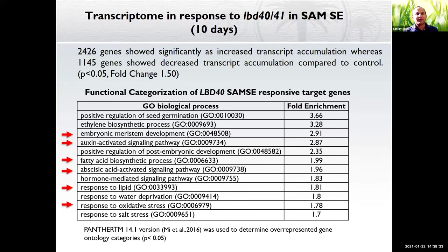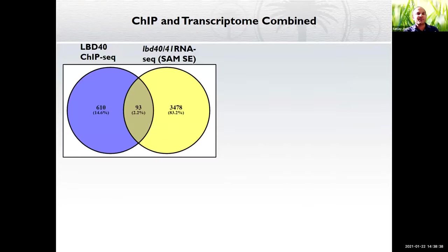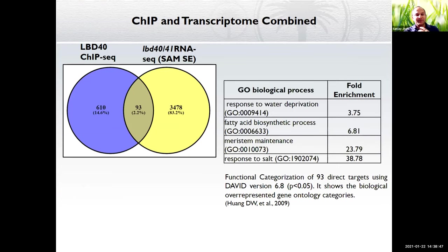We then wanted to find the direct targets by combining the ChIP-seq and transcriptome data. Using a Venn diagram, we compared the LBD40 ChIP-seq data and lbd40/41 RNA-seq data and found 93 overlapping targets. Gene ontology of these 93 targets again showed water deprivation, fatty acid biosynthesis, and meristem maintenance — all related to embryogenesis.